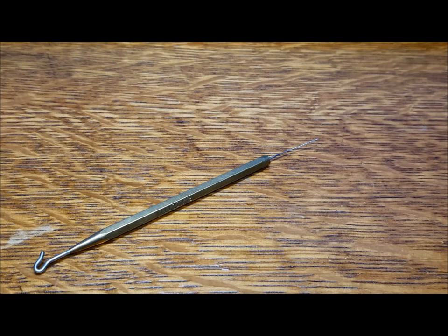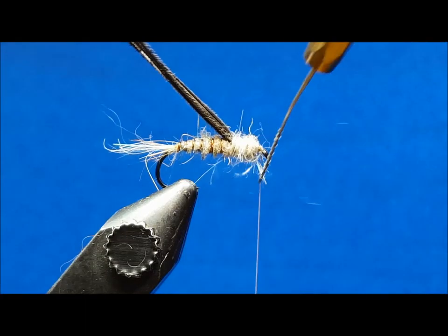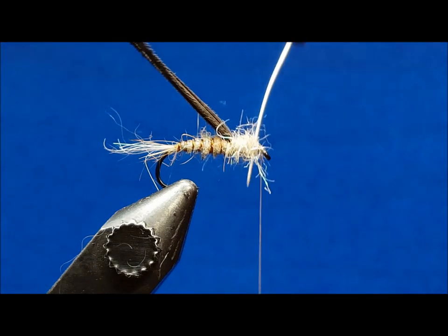The most common dubbing tool that I use is a dubbing teaser. The rough metal edges of this tool allow me to break free fibers that have been applied with a dubbing rope to give the pattern a buggier look.